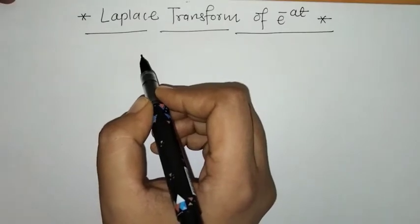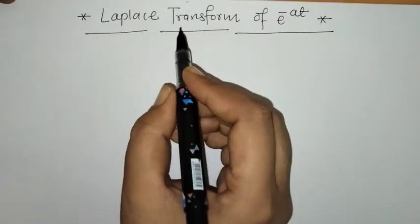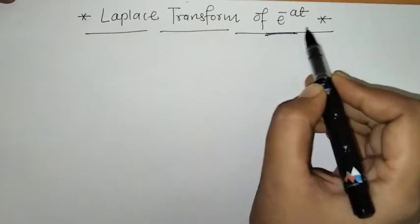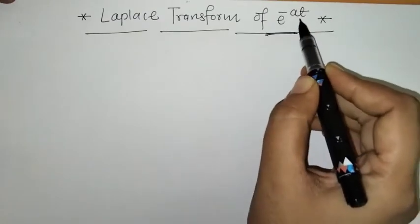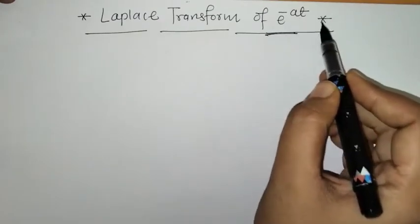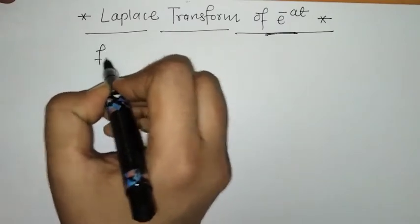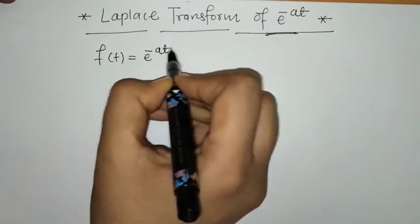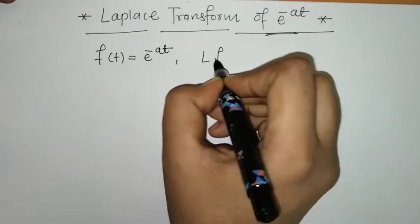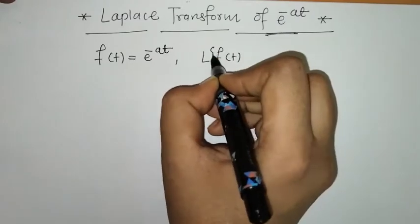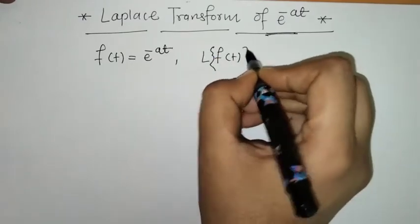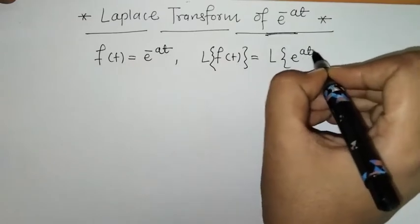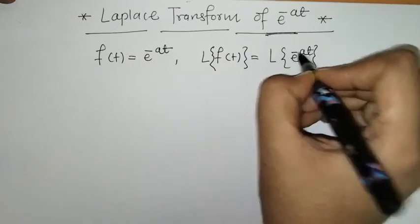Hello everyone, welcome to Unlock Maths. Today we have to find the Laplace transform of e raised to minus at, where a is a constant. So here we have f of t equals e raised to minus at, and we have to find the Laplace of f of t, that means the Laplace of e raised to minus at.